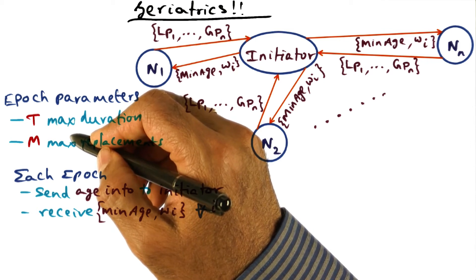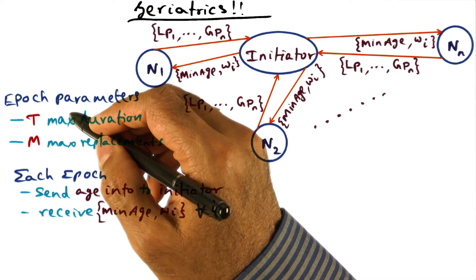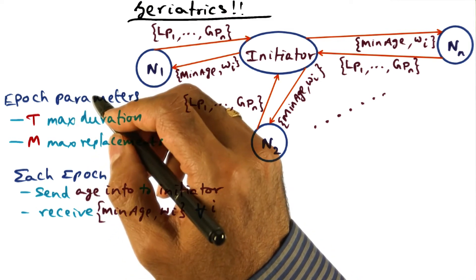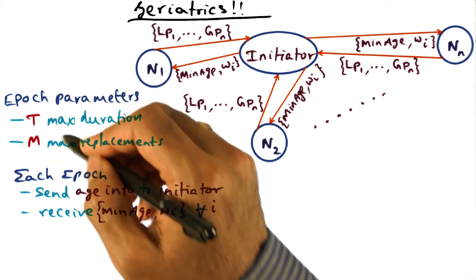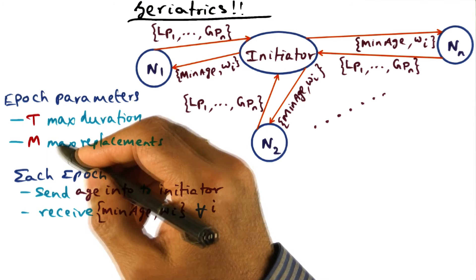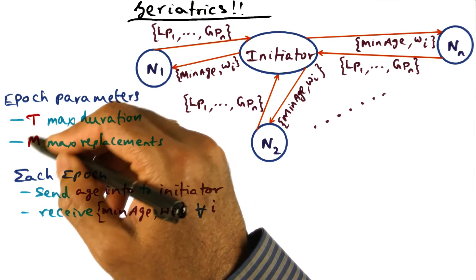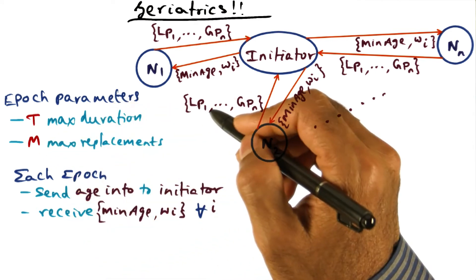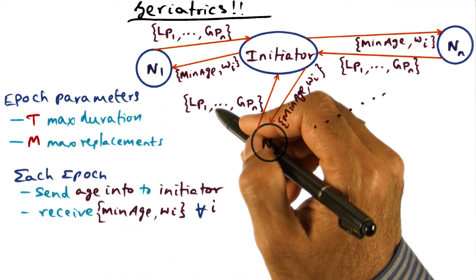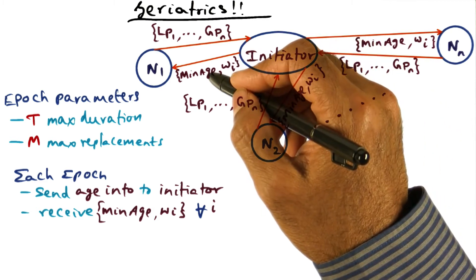So any page with less than the minimum age are pages that are active and that are going to survive this upcoming epoch. Whereas any page whose age is older than that minimum age is part of this set of M pages that are going to be replaced in the upcoming epoch, and those are the replacement candidates. That's minimum age.